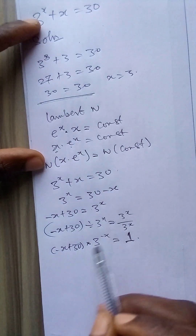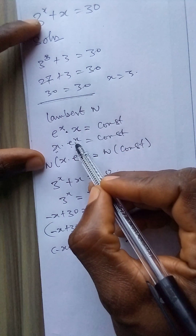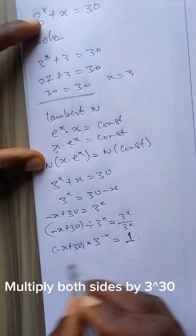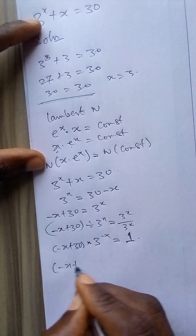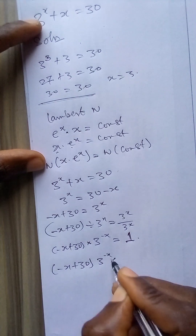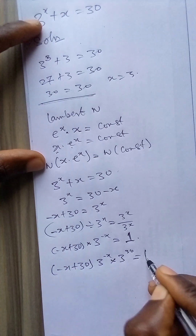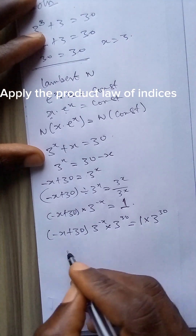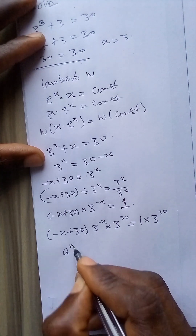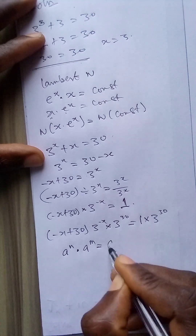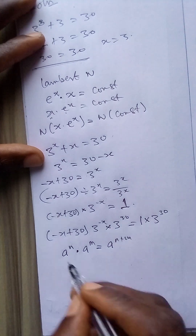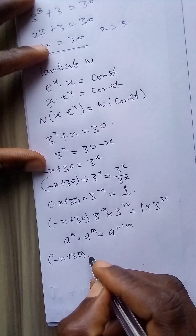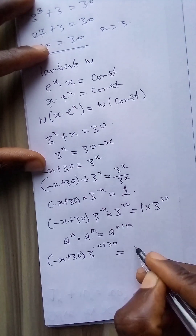We want to make the coefficient and the power of the exponent the same. To do that, we multiply both sides by 3 to the power 30, giving minus x plus 30 times 3 to the power of minus x plus 30 equals 3 to the power 30. Applying the product law of indices — a to the power n times a to the power m equals a to the power n plus m — we successfully combine the exponents.